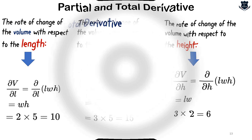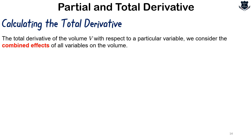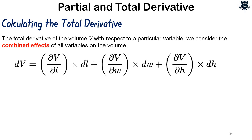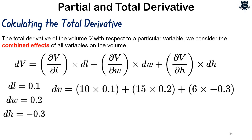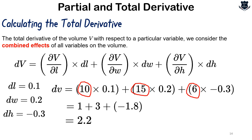Now let us calculate the total derivative. The total derivative of the volume V considers the combined effects of all variables: dV = (del V / del L) dL + (del V / del W) dW + (del V / del H) dH. Assuming we change the length by dL = 0.1, width by dW = 0.2, and height by dH = −0.3, we plug in the values: dV = 10 × 0.1 + 15 × 0.2 + 6 × (−0.3).